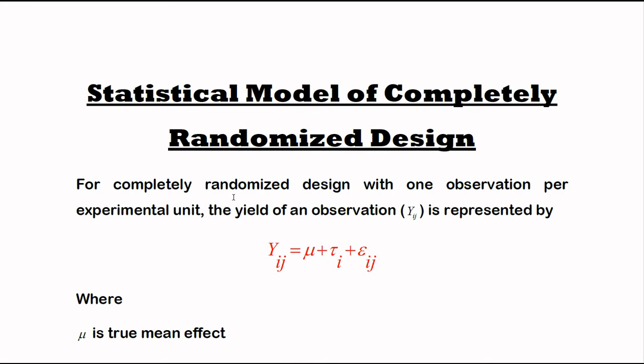abbreviation of completely randomized design, with one observation per experimental unit. In the previous video on completely randomized design, I explained how we assign each treatment to every observation. The yield of an observation Y_ij is